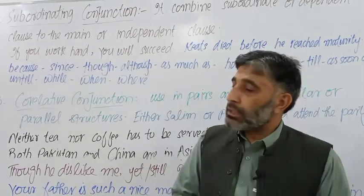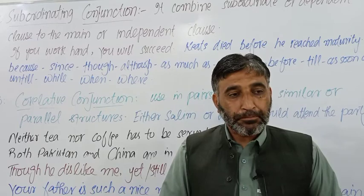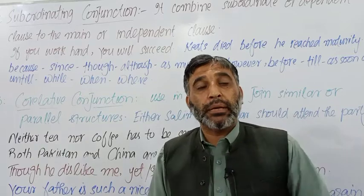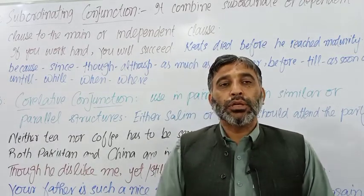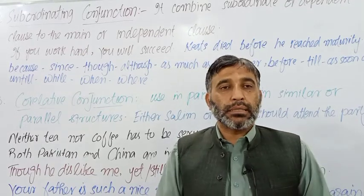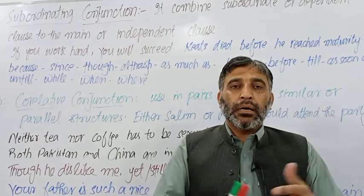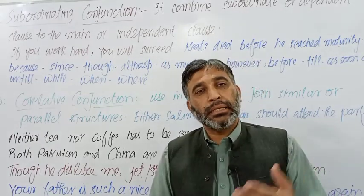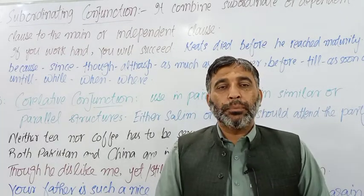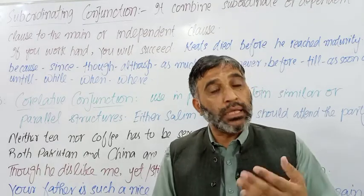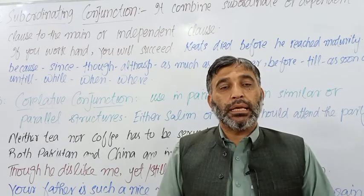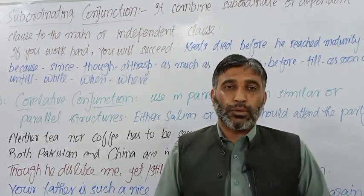Today we are going to talk about the subordinating conjunction. Subordinate کے نام سے یہ ظاہر ہے کہ ماتحت — subordinate کا معنی ہے ماتحت. اس کو dependent class بھی کہتے ہیں. Dependent class یا subordinate class کے ساتھ یہ استعمال ہوتا ہے. جب ہم complex sentence کی بات کرتے ہیں تو اس میں ایک independent class ہوتا ہے اور ایک dependent class ہوتا ہے. Dependent class وہی ہوتا ہے جو اپنا معنی خود نہیں دے سکتا — اس کے complete sense کے لیے ایک independent class کی ضرورت ہوتی ہے.